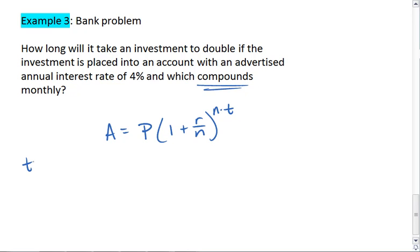What we know: T is in years, we're solving for T, the rate is 0.04, it compounds monthly so n equals 12. What we're not sure about is the initial amount and the final amount. All we know is that the final should be double the initial.